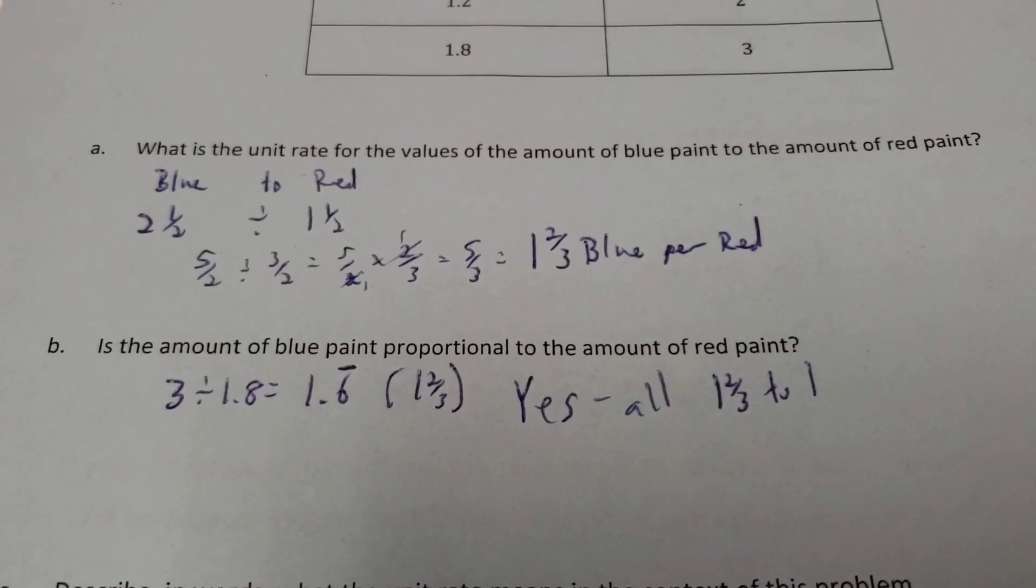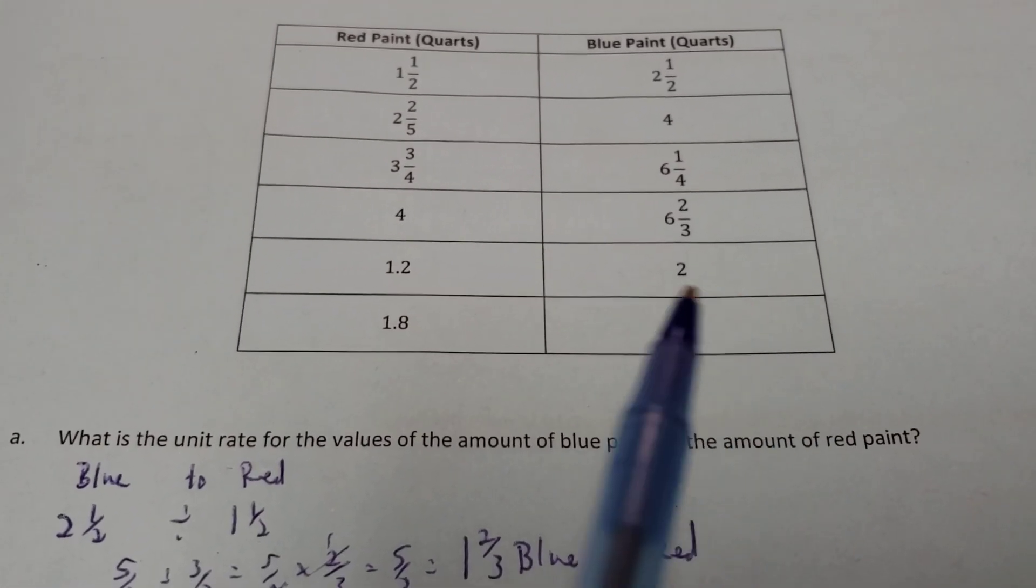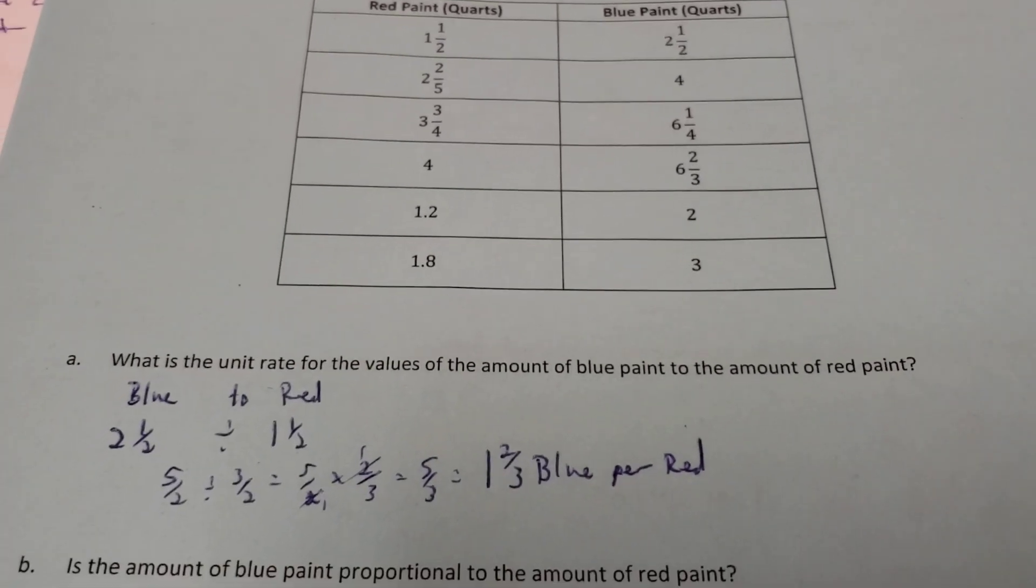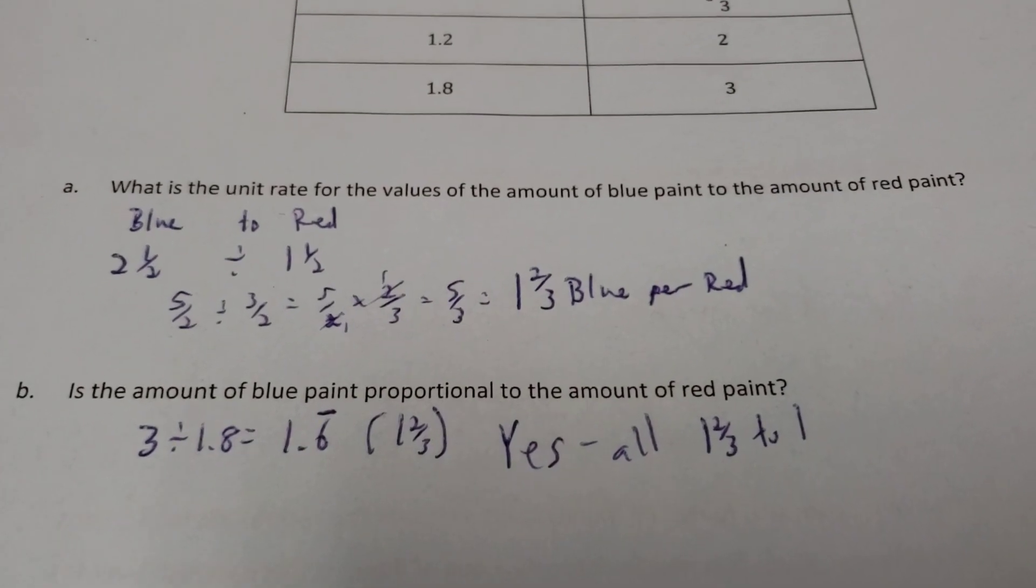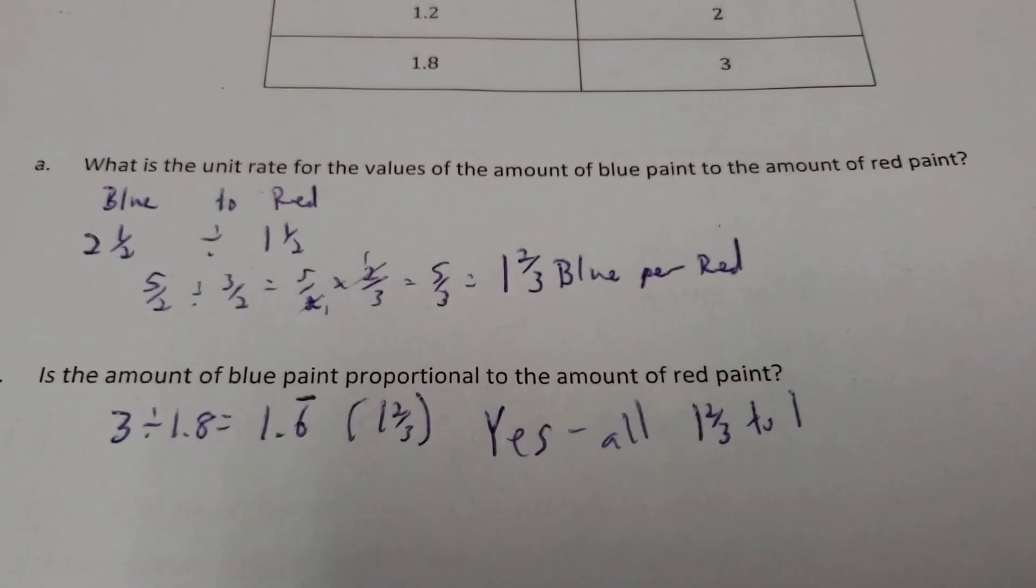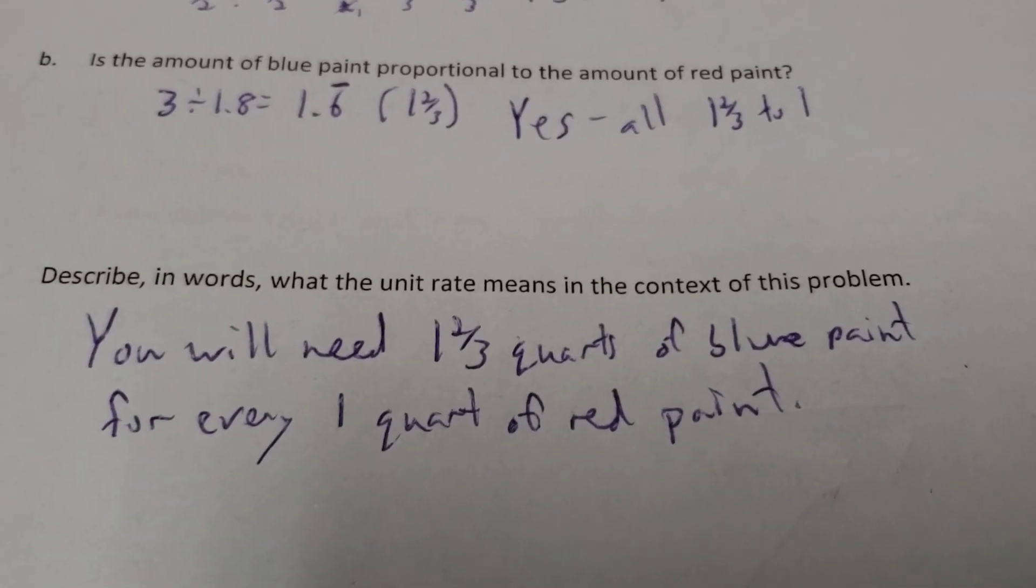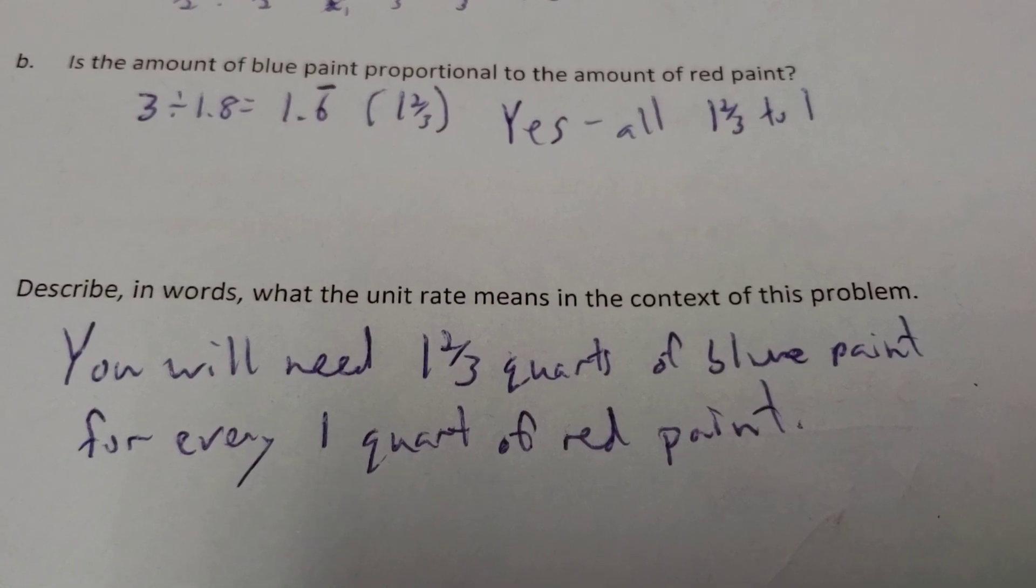What's the amount of, is the amount of blue paint proportional to the amount of red paint? Well, I start looking at some of the other ones. Like, if I took, for example, like, 3 divided by 1.8, 2 divided by 1.2. And, yeah, so you could do all the other numbers, too. And, they all end up being, like, a 1 and 2/3rds to 1 type of ratio. You get 1 and 2/3rds every time you divide. So, describing words of that unit rate means, it says you'll need 1 and 2/3rds quarts of blue paint for every 1 quart of red paint.